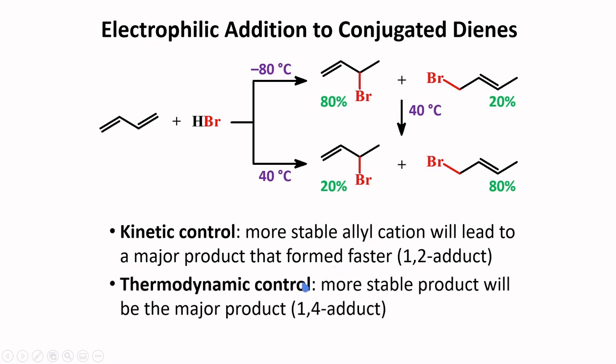We can also have thermodynamic control of a reaction. Here, the more stable product will be the major product. In our case, the 1,4-addition product is more stable because of the more substituted double bond, making it the major product under thermodynamic control.